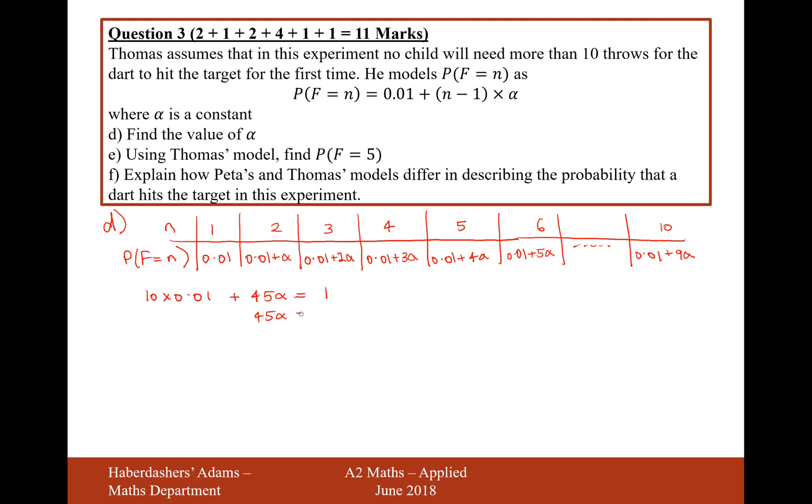So 45 alphas will equal 0.9 when I move this thing here onto the other side. And then divide by 45. So 0.9 divided by 45 gives us 1 in 50, or 0.02. So alpha equals 0.02.